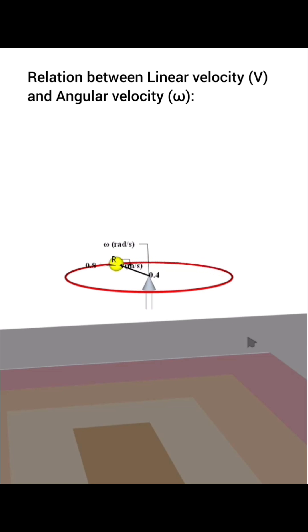In this animation, you will see that as the linear velocity increases, the angular velocity also increases and they are directly proportional to each other. Therefore, v is directly proportional to omega.